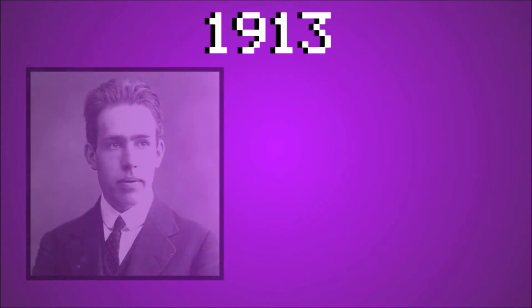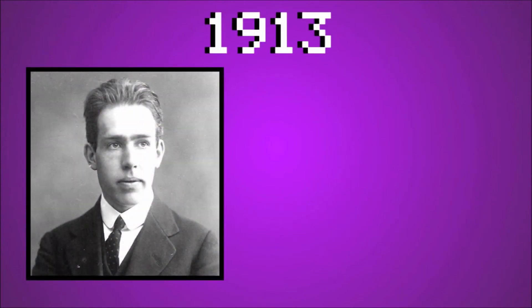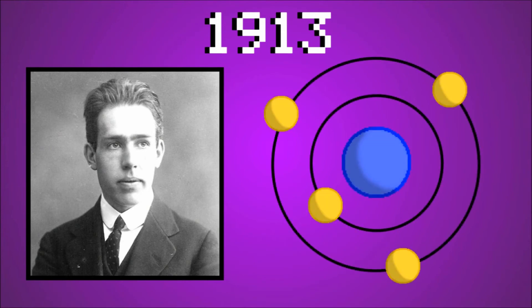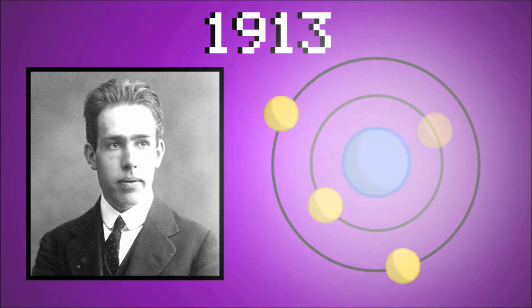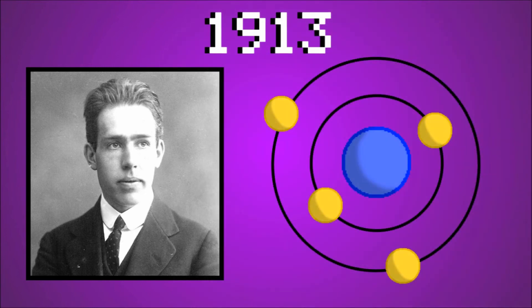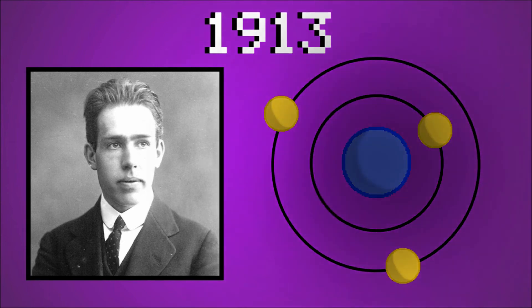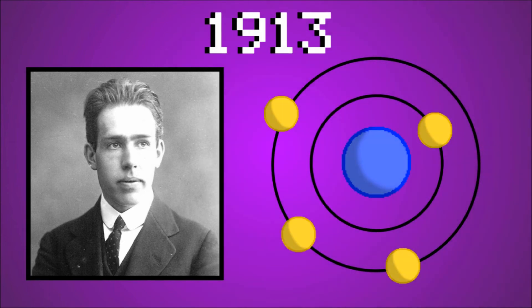Come 1913, a man named Niels Bohr modified Rutherford's model by saying that electrons orbited in stable, stationary orbits around the nucleus, and that each orbit had its own energy level depending on the distance from the nucleus. His model also claimed that light was emitted from an atom when an electron moved from a higher orbit to a lower orbit, and that light was absorbed when an electron moved from a lower orbit to a higher one.